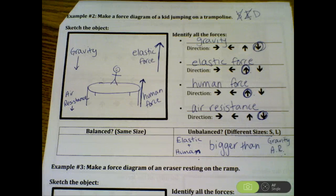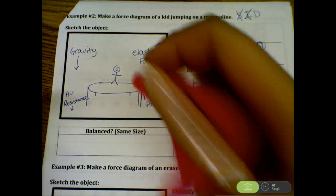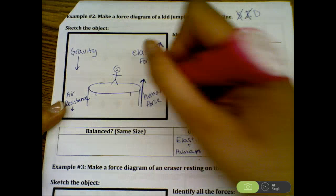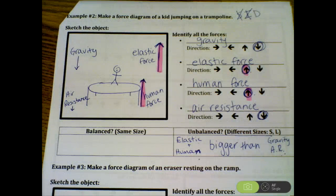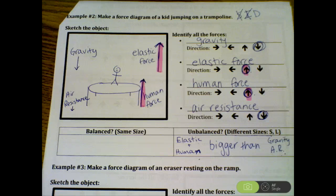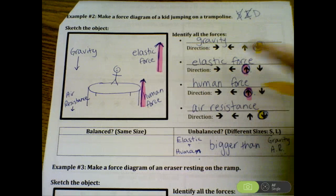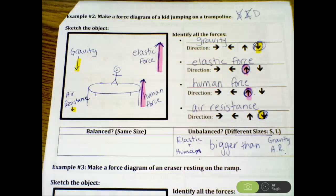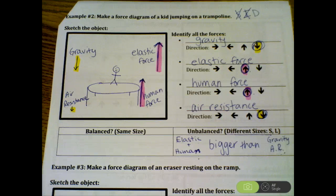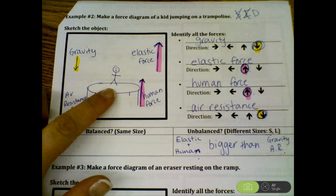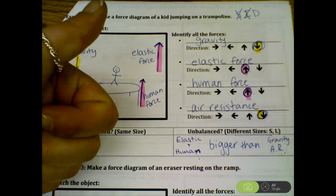Clearly, these two upward forces are a lot longer than these two little downward forces. And that tells us that the overall motion of this object, this person, is going to go up in the air.